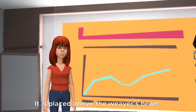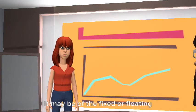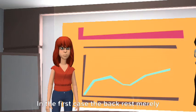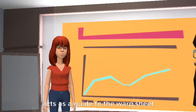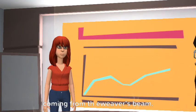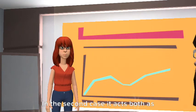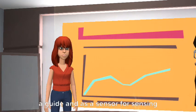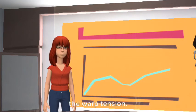Next is backrest. It is placed above the weaver's beam. It may be of the fixed or floating type. In the first case, the backrest merely acts as a guide to the warp sheet coming from the weaver's beam. In the second case, it acts both as a guide and as a sensor for sensing the warp tension.